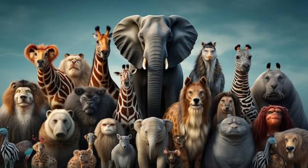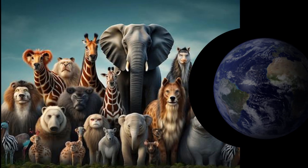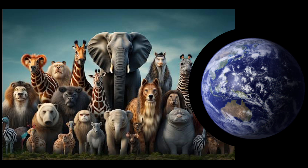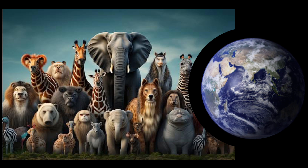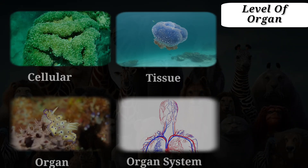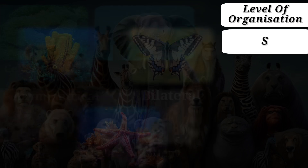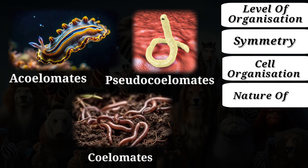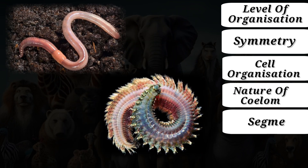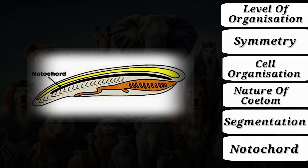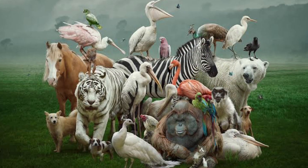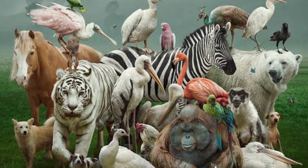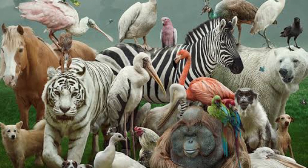With over a million animal species on our Earth, it would be difficult to categorize them into different groups. However, with the help of basic fundamental features, such as level of organization, symmetry, cell organization, nature of coelom, segmentation, and notochord, scientists have classified animals into various groups. Let's understand each of these basic fundamental features in detail.